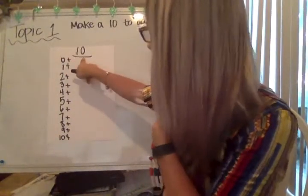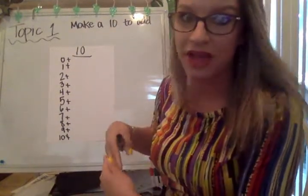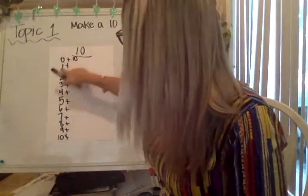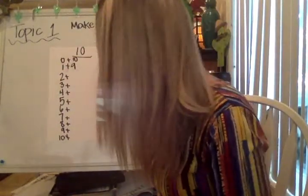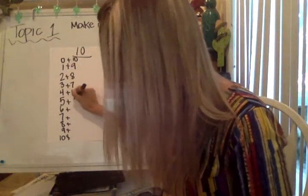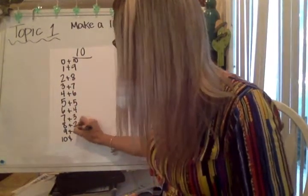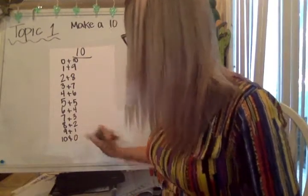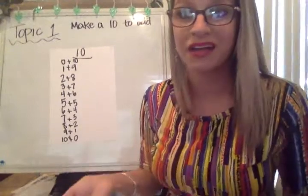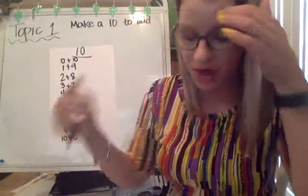Over here on this side, I'm essentially going to be counting back from 10 all the way to zero. Zero plus 10 equals 10, and one plus nine is 10. If I just follow that: 10, nine, eight, seven, six — five plus five is 10, six and four, seven and three, eight and two, nine and one, and ten and zero. So here I have a chart to reference. It is something that you should start having memorized in your head.